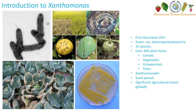Xanthomonas infection causes huge and significant agricultural problems globally. In high-income countries this causes large amounts of economic losses, and in lower-income countries this can be even more serious, because the host plants are grown for both cash and subsistence purposes, so it can cause really serious implications. Xanthomonas pathogens are generally thought to be seed-spread, and they produce this signature yellow exopolysaccharide called Xanthomonadin.